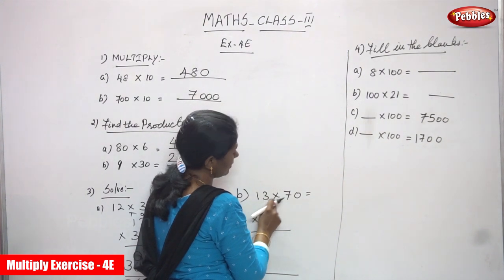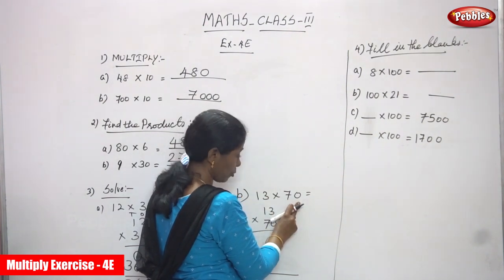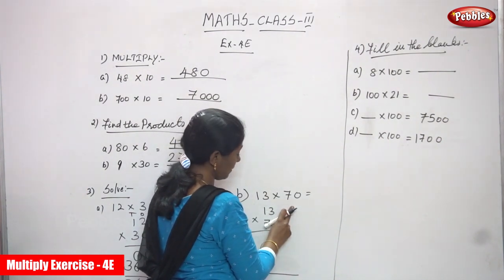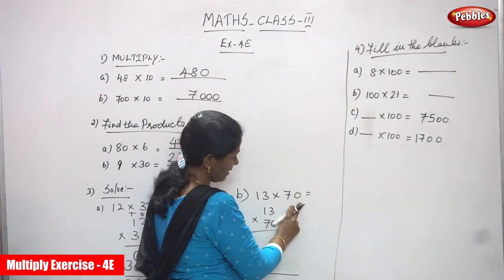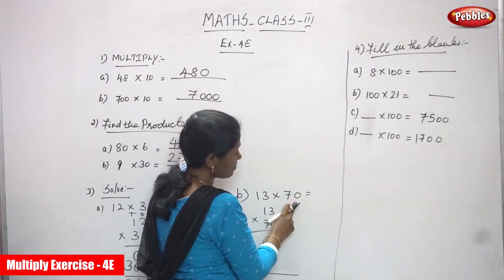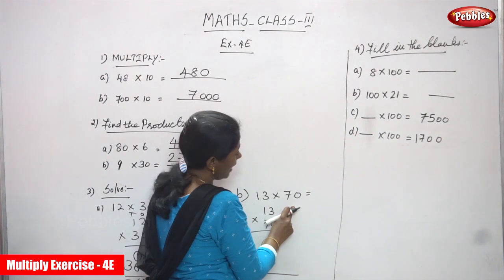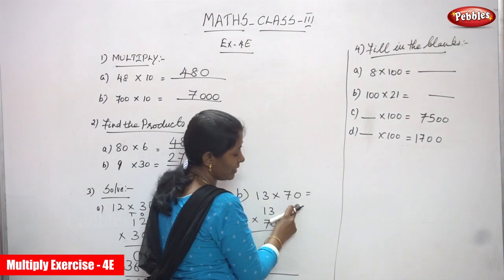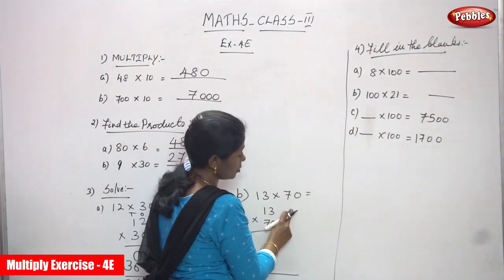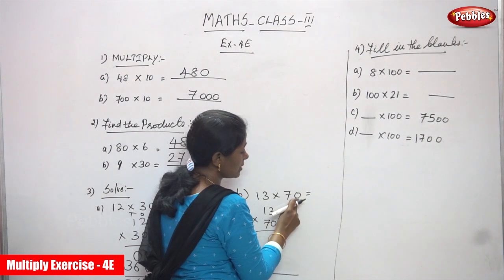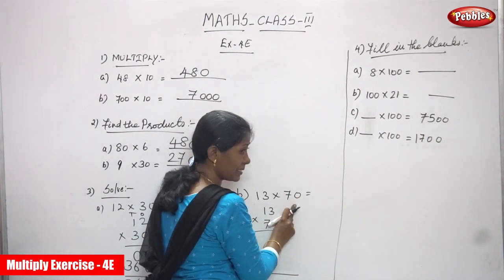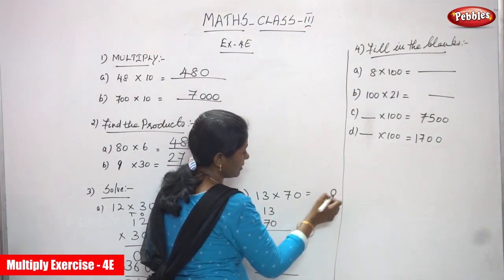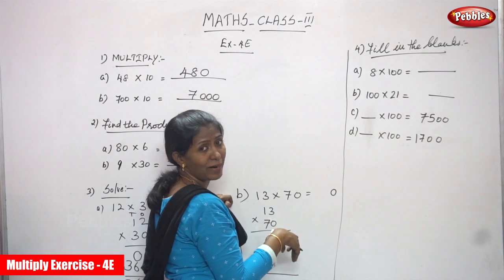13 into 70 — you are going to multiply it. 70 means 7 into 10. 10 means only one zero. You must consider the zero always. How many zeros in 10? Only one zero. So you must write the zero at the end first, then multiply the remaining number.